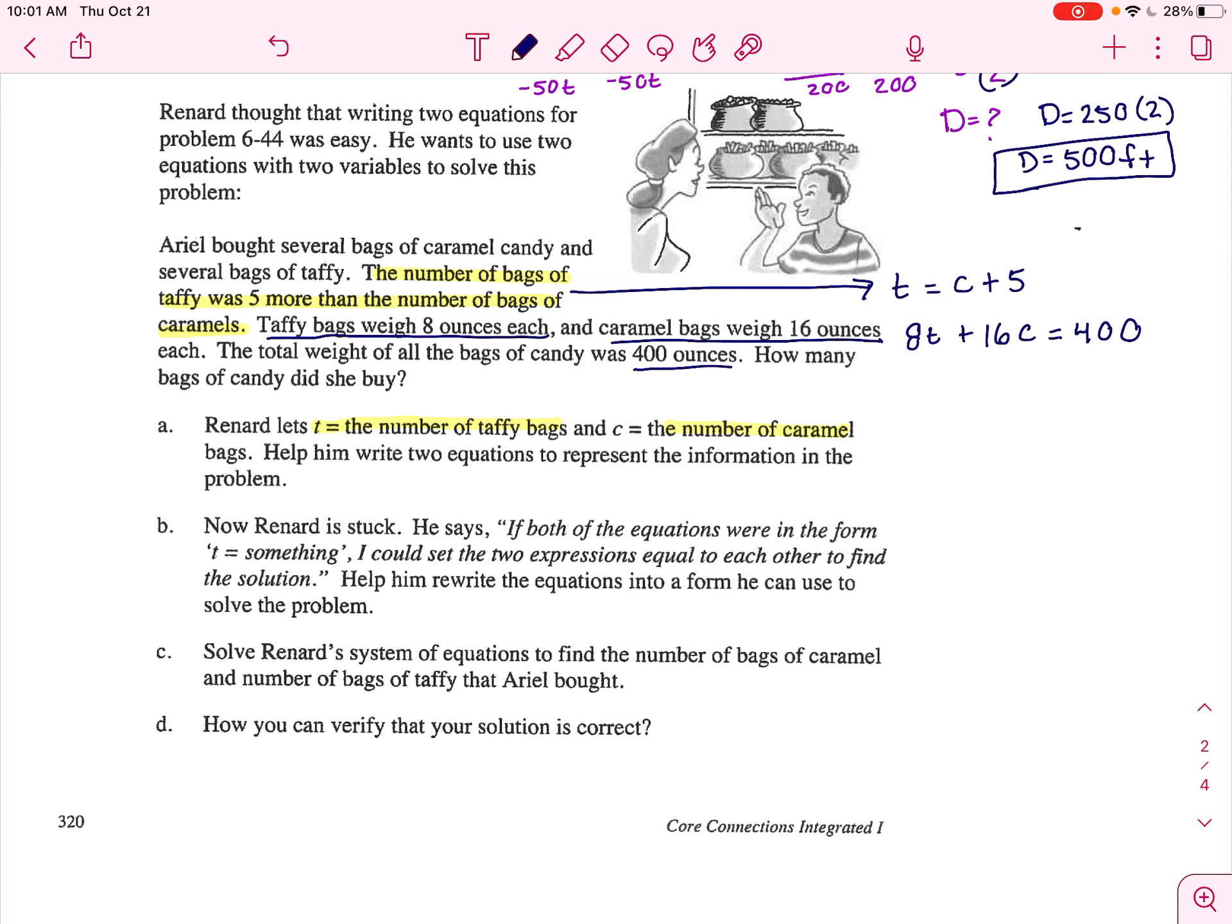Well, this isn't set up as an equal values problem. It doesn't have T equals and T equals, but you could do that. Let's solve this equation for T. So I'll subtract 16C on both sides. So we get 8T equals 400 minus 16C.